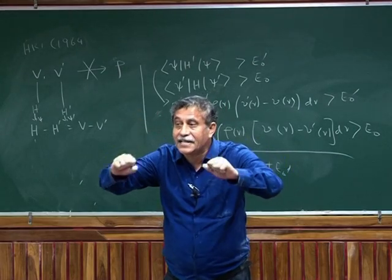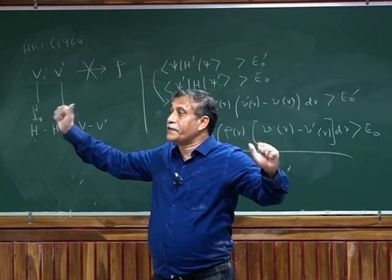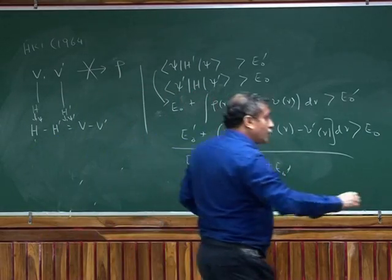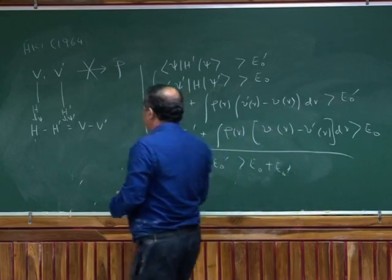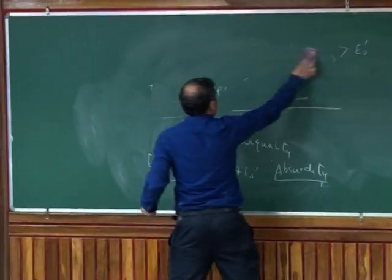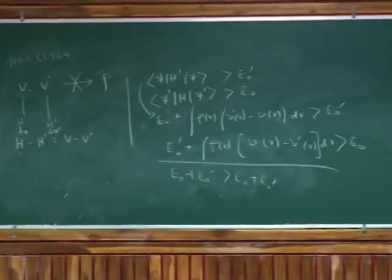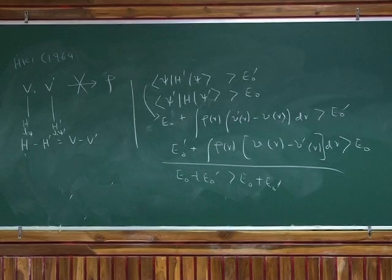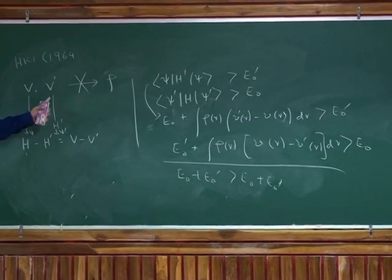It means given a density, I have a unique V. What Hohenberg and Kohn then later showed is that given one density, given a density, there is a unique V external. There cannot have two V external, that I have shown. So given a density cannot correspond to V and V prime, two different external potentials.